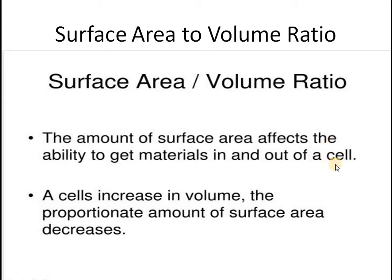If you consider any animal cell, you know what it requires: it requires glucose, amino acids, and oxygen. But it also excretes out urea and carbon dioxide. So there are certain things which need to go into the cell and certain things which have to come out of the cell. This exchange is dependent upon the surface area. Whenever you increase the volume of a cell or any organism, its surface area to volume ratio would decrease.